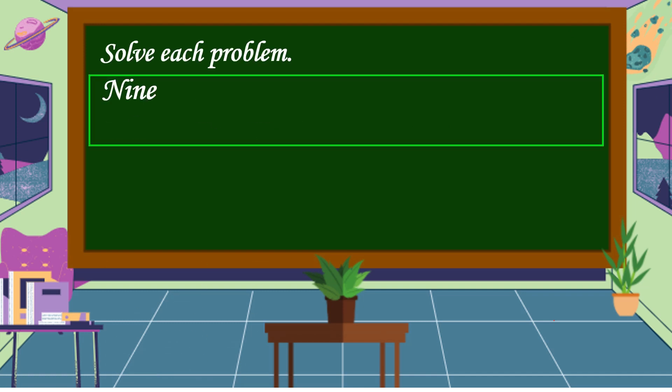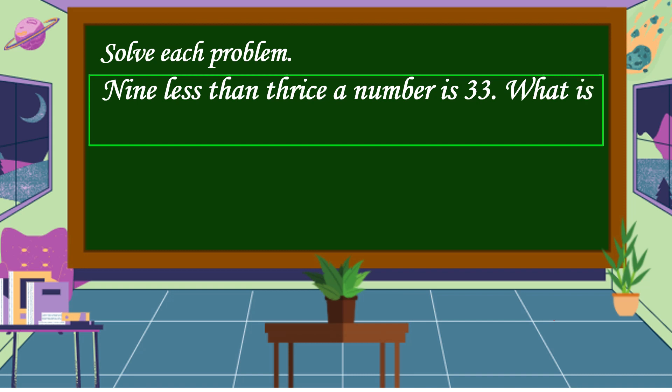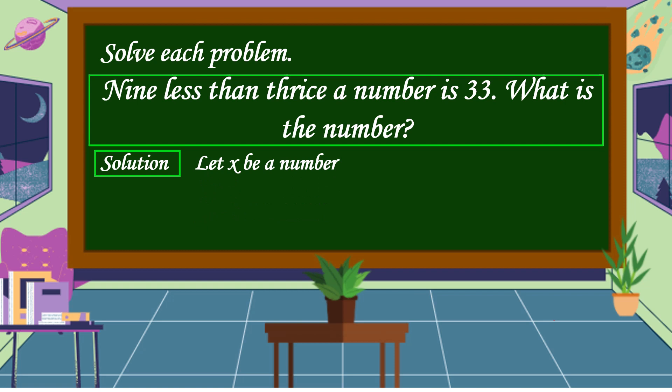Another problem: 9 less than three times a number is 33. What is the number? To solve this, we're going to translate it into an algebraic equation. Let x be the number. The algebraic equation is 3x minus 9 is equal to 33.